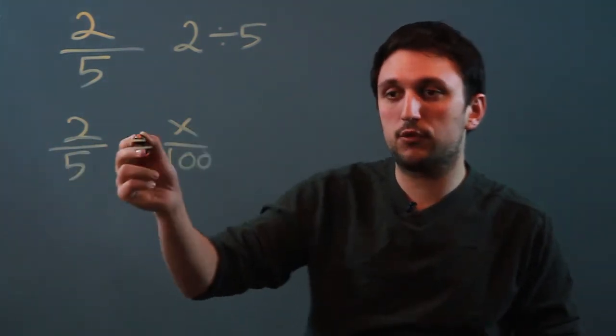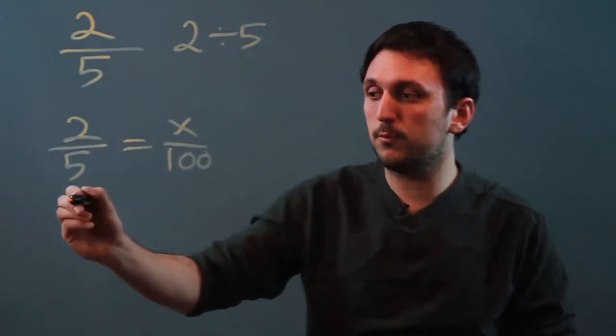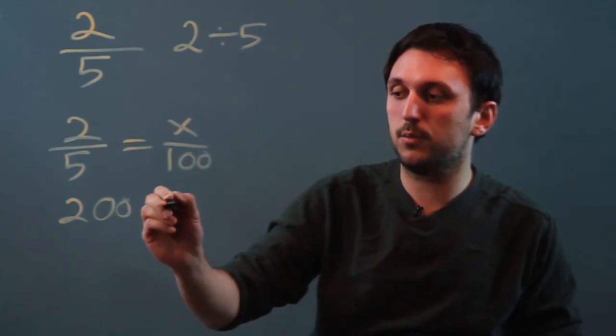So we have a fraction, an equal sign, and a fraction, so we cross multiply. 2 times 100 is 200, equals x times 5, which is 5x.